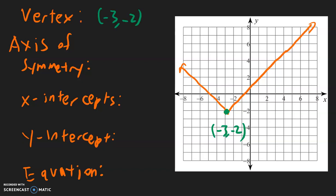The axis of symmetry splits this in half. When I draw this line over here, you can imagine if you take this paper and fold it right at the line, the graph will match on the two sides. So this line is going to be x equals negative 3, because it goes through the x-axis at x equals negative 3.